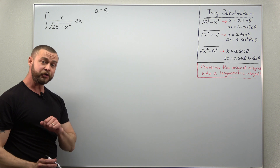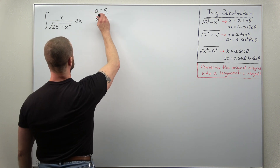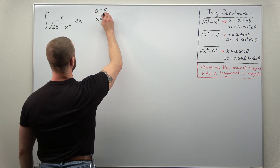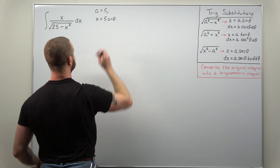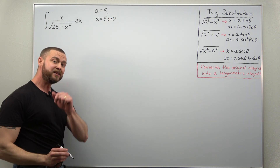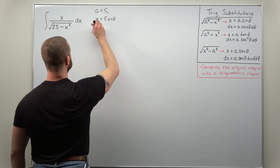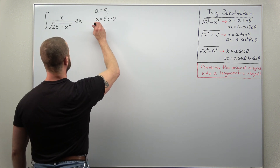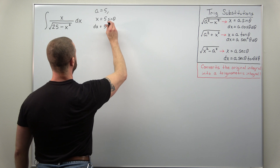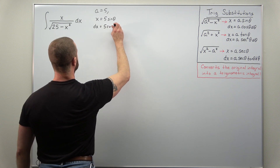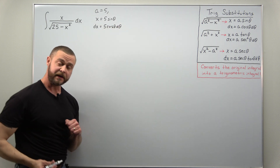Our substitution for x is going to be x equals 5 sine of theta. Always immediately calculate your differential dx, and that comes out to 5 cosine theta d theta.